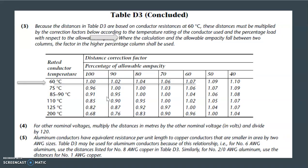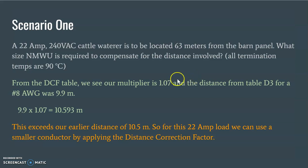So let's go back to the DCF table and take a look at that. So we go across here, percentage of allowable ampacity. Well, we don't have a 55. We have a 50 and a 60. Look up here at this bullet point—that's not a bullet point, I just put an arrow there. It says where the calculation and the allowable ampacity fall between two columns, the factor in the higher percentage column shall be used. So it tells us that we just go to the next higher column when it falls between two of these values. Even if it was 51 percent, we'd go to the 60. Our rated conductor temperature again is 60. We go across here until we get to this value here. So this becomes our multiplier. So we have our multiplier, and we know what our distance from Table D3 is for a number 8 is 9.9. 9.9 times 1.07 works out to 10.593 meters.